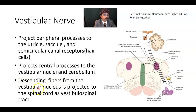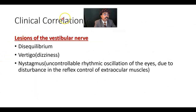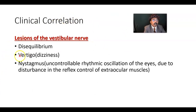Descending fibers from the vestibular nuclei are projected to the spinal cord as the vestibulospinal tract. We need the spinal cord's contribution in the maintenance of equilibrium and balance, and that is done by the vestibulospinal tract, originating from the lateral vestibular nucleus.